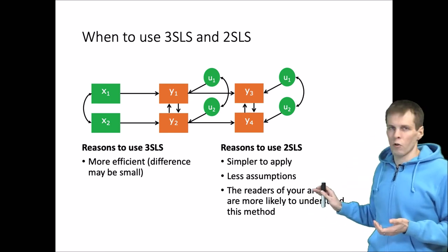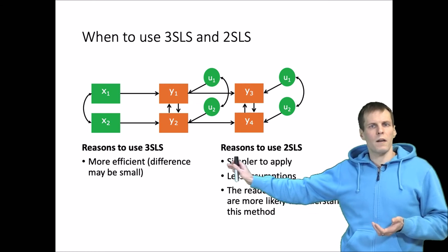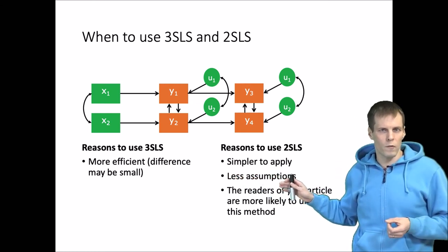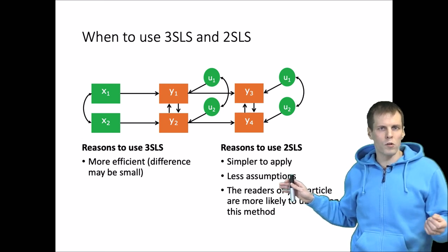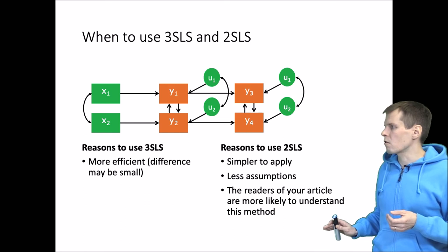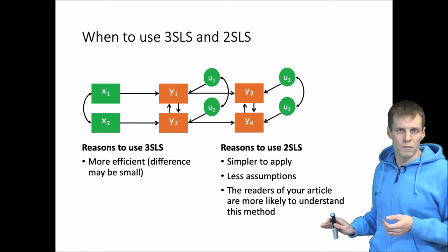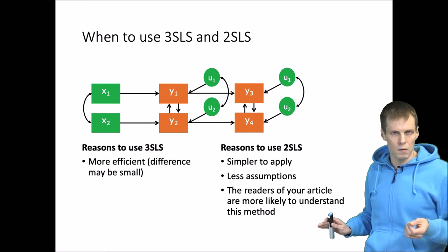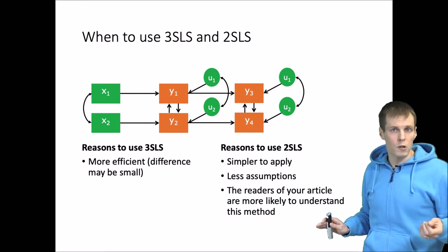It makes less assumptions, it's more robust. So three-stage least squares requires assuming that all exclusion criteria for every variable hold even across equations. Also, the readers of your article are more likely to understand this method. I think I've seen more incorrect explanations of three-stage least squares in applied literature than I've seen correct explanations.